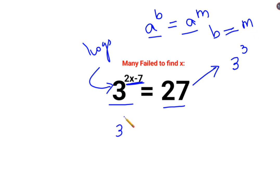So here we have 3 raised to 2x minus 7 equals to 3 raised to 3. Okay, so like I said, now since the bases are same, we can directly equate the indices. So we can say 2x minus 7 equals to 3.